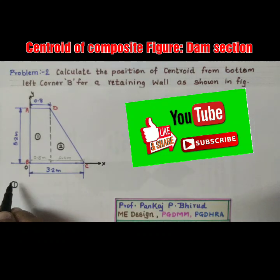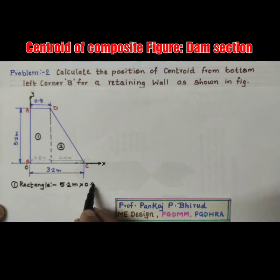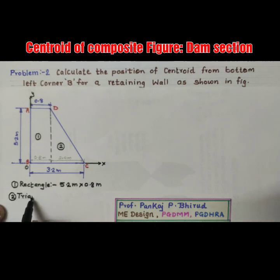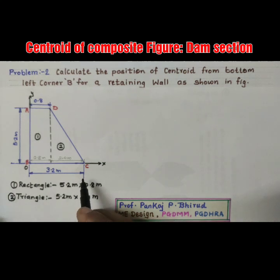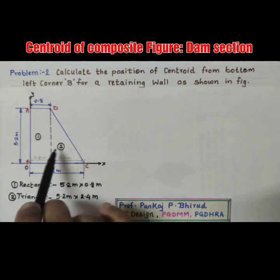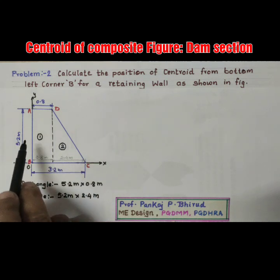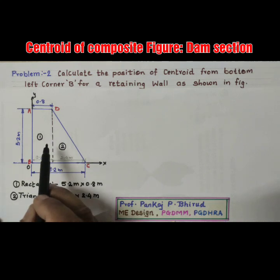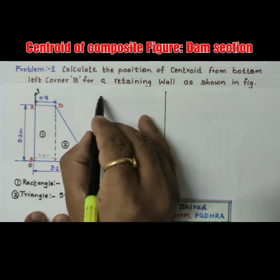The first figure is a rectangle with dimensions 5.2 m by 0.8 m. The second figure is a triangle with height 5.2 m and base 2.4 m. Now check whether this figure is symmetrical to the X or Y axis. This dam section is not symmetrical to either axis, so we have to calculate X1, X2, Y1, Y2, and then X-bar and Y-bar.